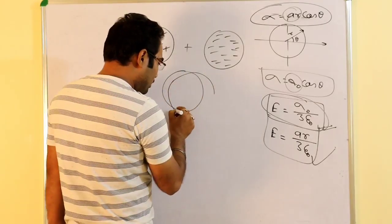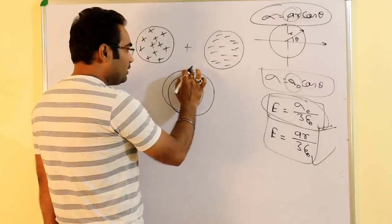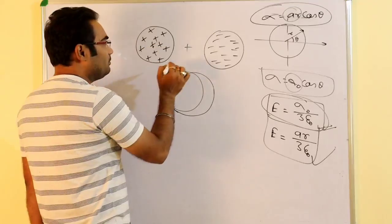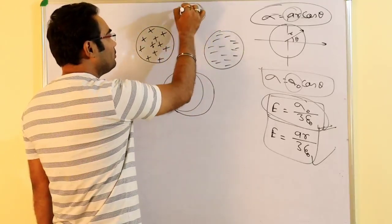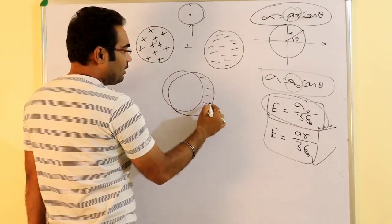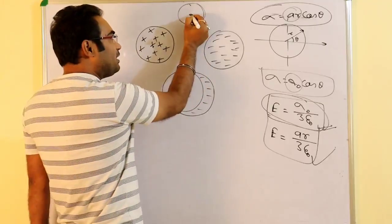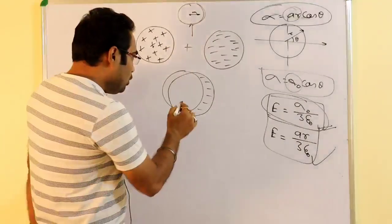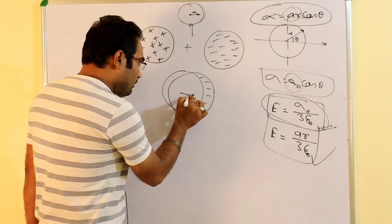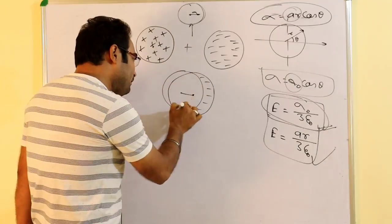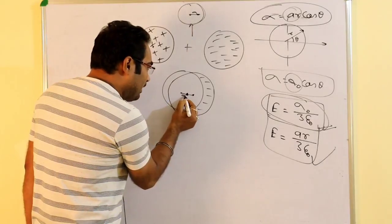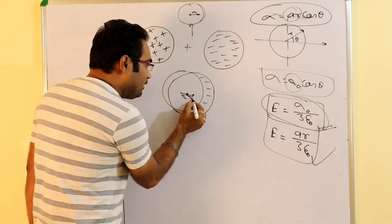Now consider: there is a uniformly charged positive sphere, and there is a uniformly charged negative sphere. If both are placed at the same location they become neutral. Now if one is shifted slightly — say the negative one is shifted by a distance A — then the positive sphere's center is here, the negative sphere's center is shifted by A, and the separation between the two centers is A. The equivalent sphere's center will be in the middle, at A/2 from each.